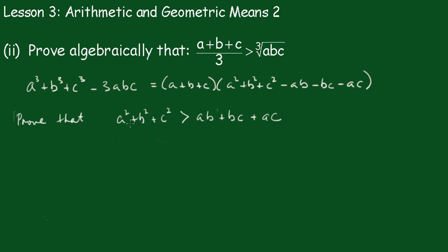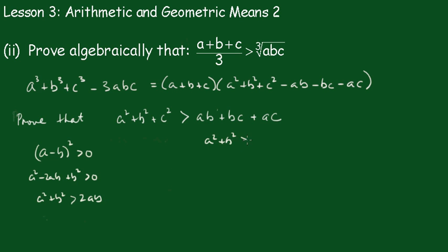The second part we need to prove is that a² + b² + c² is greater than ab + bc + ac. By doing that we can show that the expression will be positive. We start with the fact that (a − b)² is greater than 0, that is a² − 2ab + b² > 0, meaning a² + b² > 2ab. Similarly, b² + c² > 2bc, and a² + c² > 2ac.